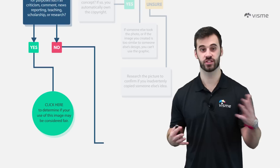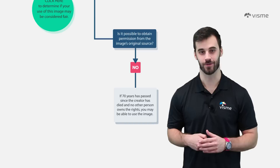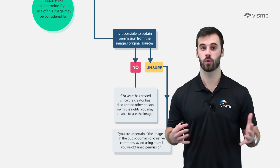If you're not using the image for one of the reasons just mentioned and it is not possible to obtain permission — maybe because the creator of the image passed away and nobody else owns those rights — then I actually have good news for you: you can use that image. However, if you're unsure if it falls under the public domain or a Creative Commons agreement, it's best to avoid using it. You don't want a quick decision to cost you time and money down the line. So if you can obtain permission, then our journey continues.